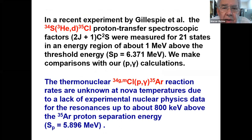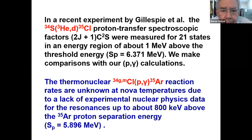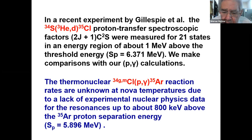There is one experimental dataset by Gillespie, very recently, where they measured spectroscopic factors and we actually do a comparison with some of our calculations. Then for the second reaction ending in Argon-35 — actually two reactions if you take into account the ground state and the isomeric state — not much is known about that particular reaction due to lack of experimental nuclear physics.